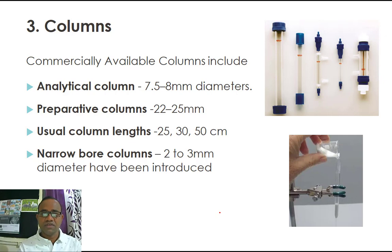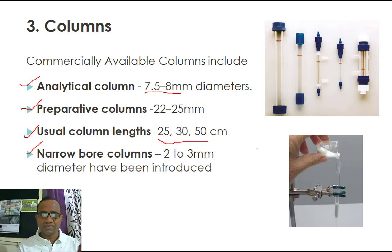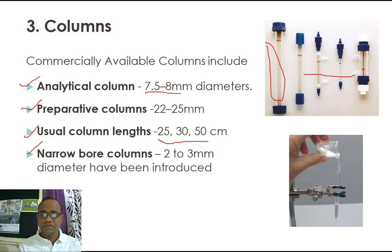Columns are commercially available in different sizes. Some are analytical columns and some are preparative columns, with a usual column length of 25 to 50 centimeters and varying diameters — narrow bore columns are also available. These are all commercially available in different sizes and diameters in order to separate a variety of samples, filled with porous gel beads.